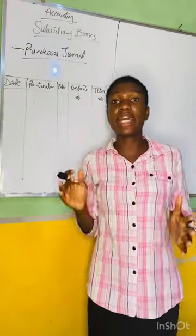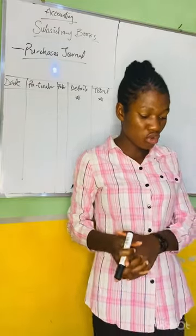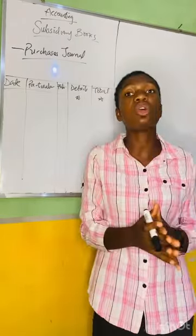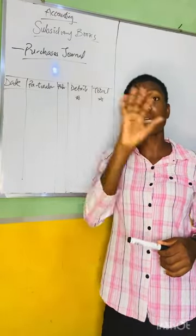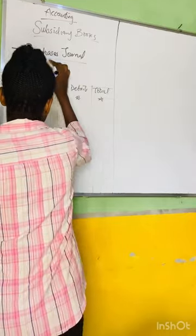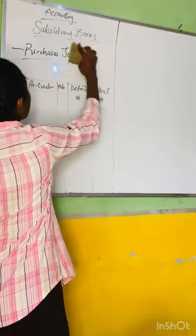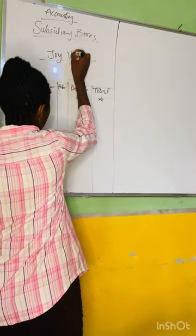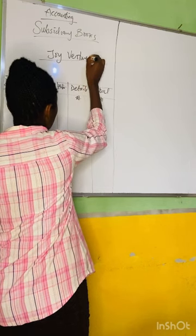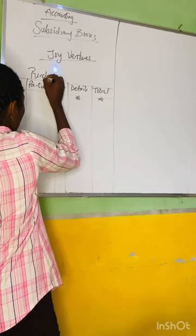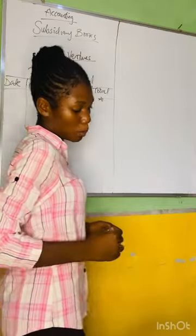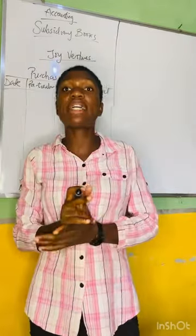We're going to take our example. We are asked to enter the following transactions in the purchases ledger of Joy Ventures. Whenever we are preparing any account, the first thing we must remember is the name of the owner of that account. The name of the owner of this account is Joy Ventures, and this is our purchases journal for the month of July 2016.